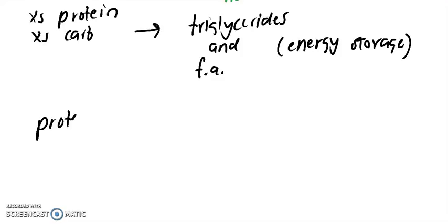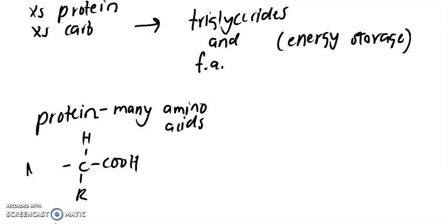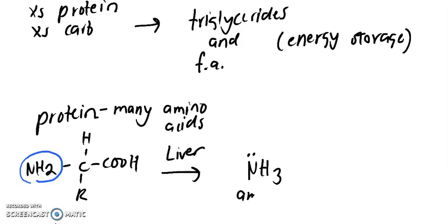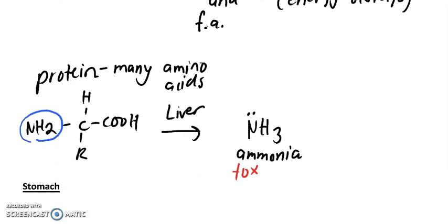The last important function of your liver is protein metabolism. We know protein is composed of amino acids. Protein is just many, many, many amino acids put together. Here's the amine group. Your liver is going to break this down into ammonia.